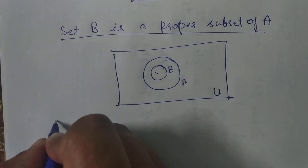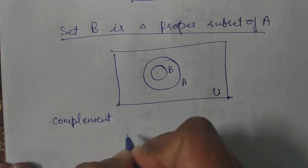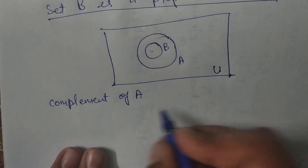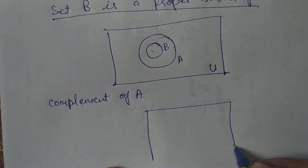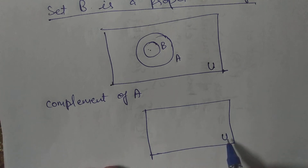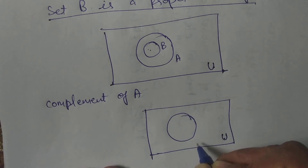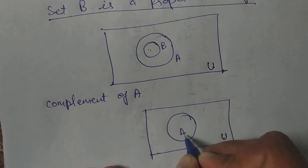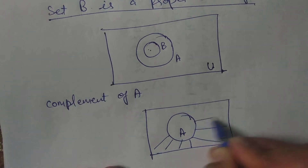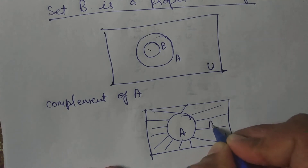Now for another example, suppose I have to represent the complement of set A. First of all, I will draw a rectangle. The interior of this rectangle represents the universal set, and the circle drawn inside represents set A. Now all the area of this rectangle outside of this circular area represents A complement.